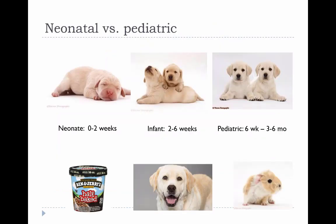It might be useful to start by defining what we mean by pediatric. In some sources, a pediatric animal is anything less than six months of age, but in others it's subdivided into the neonatal period (zero to two weeks), infant (two to six weeks), and pediatric (six weeks to three to six months). In people, a neonate is up to about a month old, infant is one month to two years, and pediatric is two to twelve years. The timeline is more compressed in dogs, but those boundaries correspond to major physiological changes.